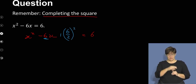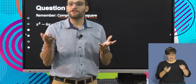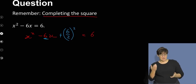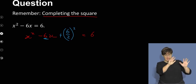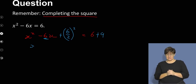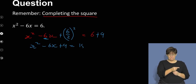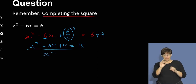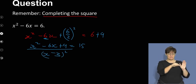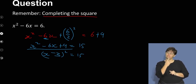We add it to both sides, because an equation is like a scale — it only balances if what I do to the left I also do to the right. So 6 over 2 is 3, 3 squared is 9; I've added 9 on both sides. This lets me factorize as a perfect square: x minus 3, all squared, equals 15.